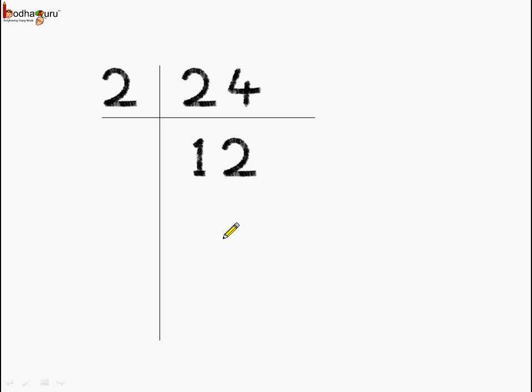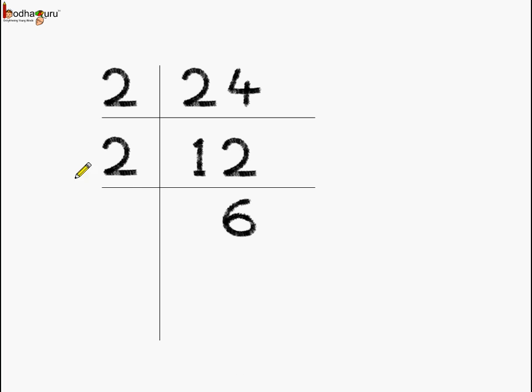Now again, we need to divide 12 by the smallest possible prime number. Here again, 12 is an even number, so we can divide it by 2, which is the smallest prime number. So let us divide by 2 — 2 sixes are 12. Again, you will see the quotient is written on the downside.